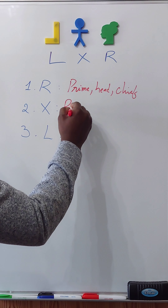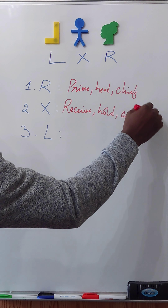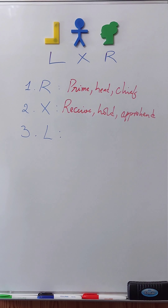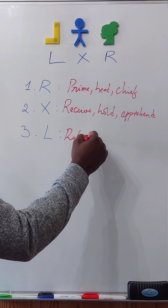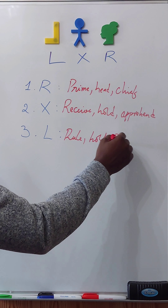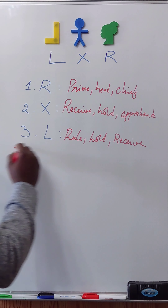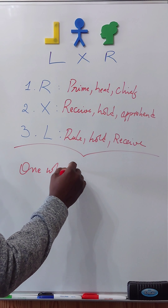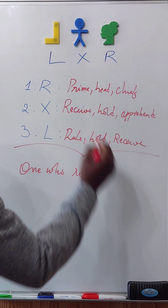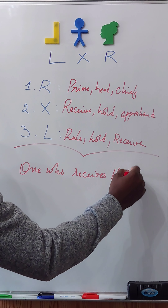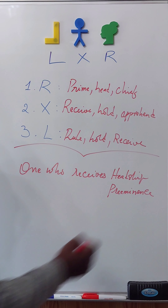CHA means to hold or to apprehend — in some instances it also means to seize. The LA means to rule, also to hold, also to receive. So altogether, in Rachel you see the imagery of one who seizes or one who receives preeminence — headship or preeminence.